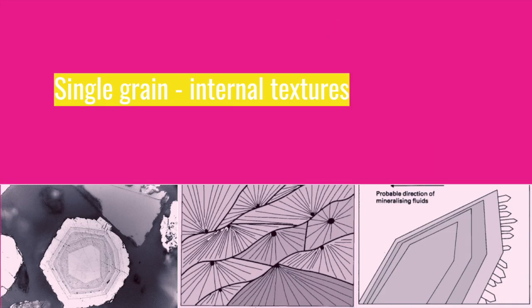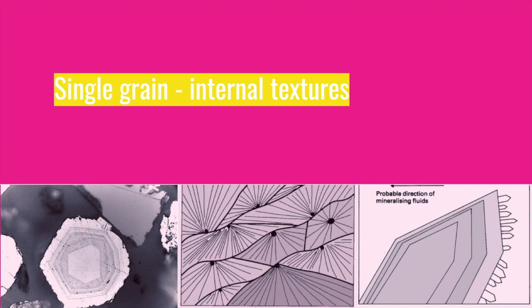Let's begin with internal textures of individual grains. We have zoned texture, manifested in terms of hardness. Zoning generally results from interruptions in growth, changes in the physical characteristics of alternating bands, or the presence of inclusions in some bands and not in others. Zoning normally indicates either repeated and renewed growth, or rapid growth and a low temperature of formation from an impure fluid.